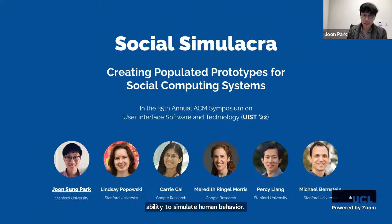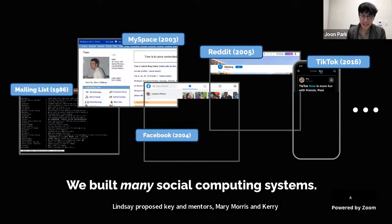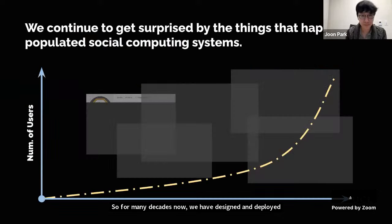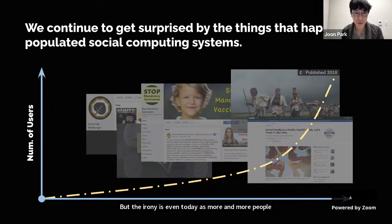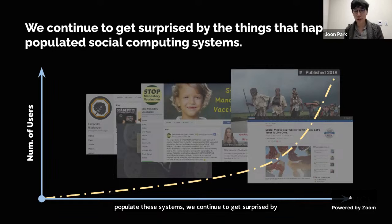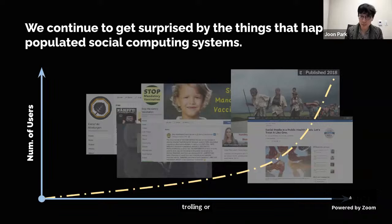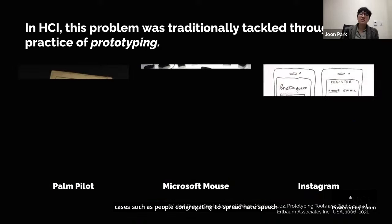This is work developed with my advisors Michael and Percy, mentee Lindsay Popelsky, and mentors Mary Morris and Carrie Kaine. For many decades we have designed and deployed countless social computing systems, but even today as more and more people populate these systems, we continue to get surprised by what happens in them — unexpected trolling, subtle antisocial behaviors, people congregating to spread hate speech and misinformation. Why is this?